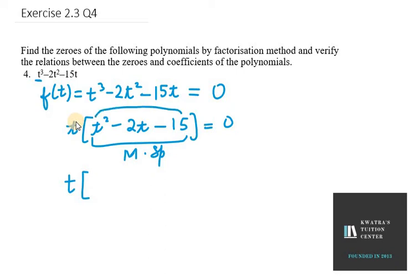So we have t outside bracket, t squared minus 2t minus 15. So a and c, that is 1 and 15. So 1 and 15 is 15 only. Now we need to find the factors such that they make minus 2t. So it will be minus 5 and it will be 3.